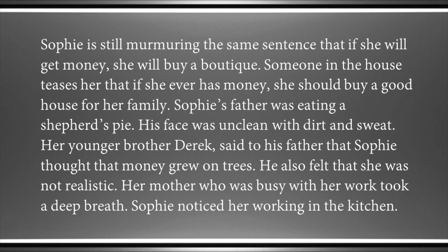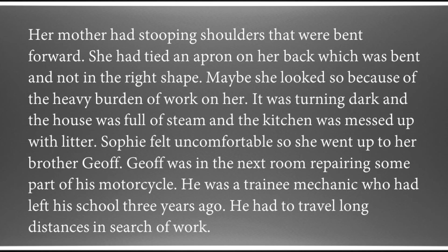Someone in the house teases her that if she ever has money, she should buy a good house for the family. Sophie's father was eating a shepherd's pie, his face unclean with dirt and sweat. Her younger brother Derek said to his father that Sophie thought money grew on trees and was not realistic. Her mother, busy with work, took a deep breath. Sophie noticed her working in the kitchen with stooping shoulders bent forward and a tied apron. The house was full of steam and the kitchen was messed up with litter. Feeling uncomfortable, Sophie went up to her brother Joff.